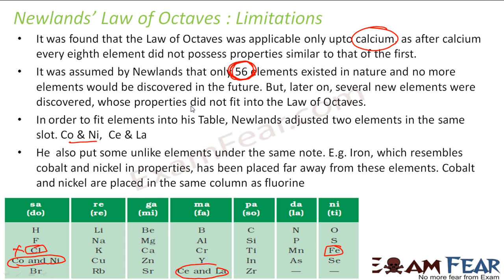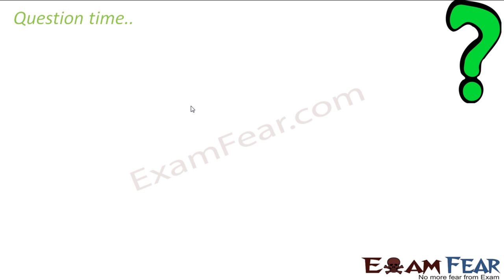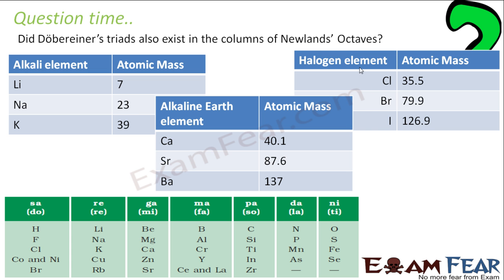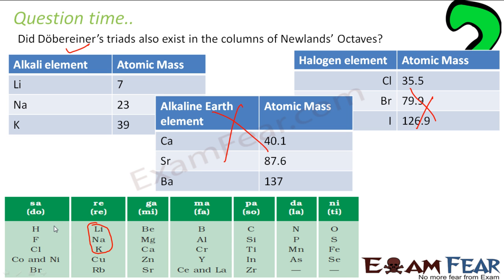Now for some questions. First: did Dobereiner triads also exist in Newlands' Law of Octaves? Looking at the table — lithium, sodium, potassium: yes, that triad exists. Calcium, strontium, barium: strontium is not there, so that triad doesn't exist. Chlorine, bromine, iodine: iodine is not there, so that triad doesn't exist either. So only one Dobereiner triad is part of Newlands' Law of Octaves.